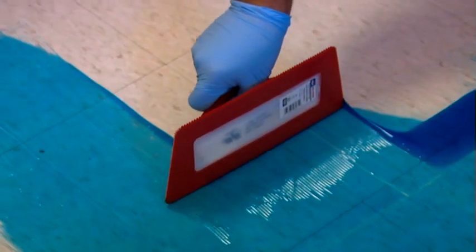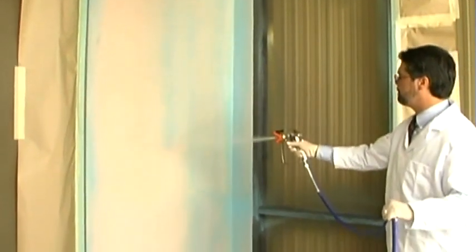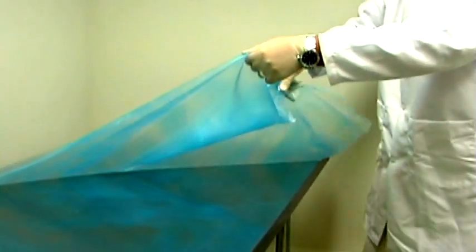Simply apply Decongel with a brush, trowel, roller, or power sprayer. Allow it to dry, then peel away the film.